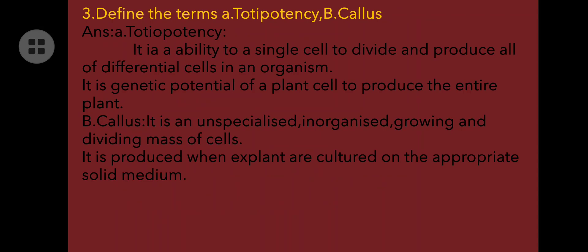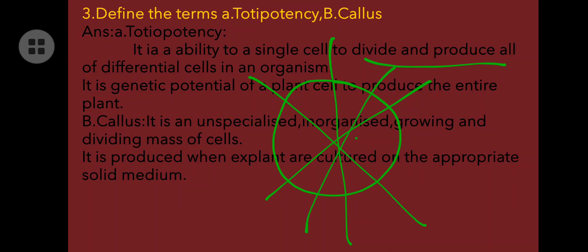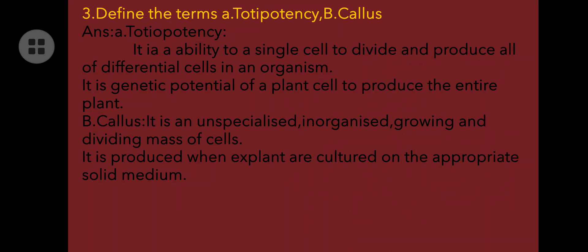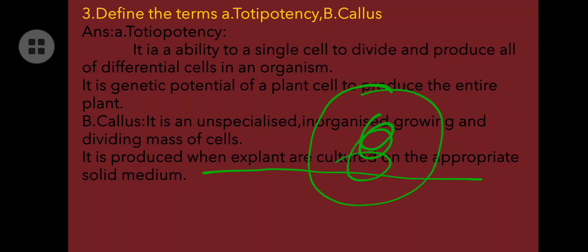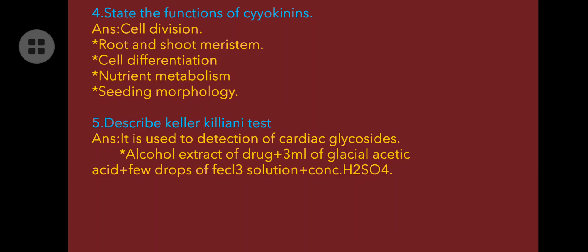Define totipotency and callus. Totipotency is the ability of a cell to divide and produce cells of differentiation in an organism — the cell divides into many equal parts and these parts develop into a new cell. Callus is an unspecialized, unorganized, growing and dividing mass of cells, produced when explants are cultured on an appropriate solid media.